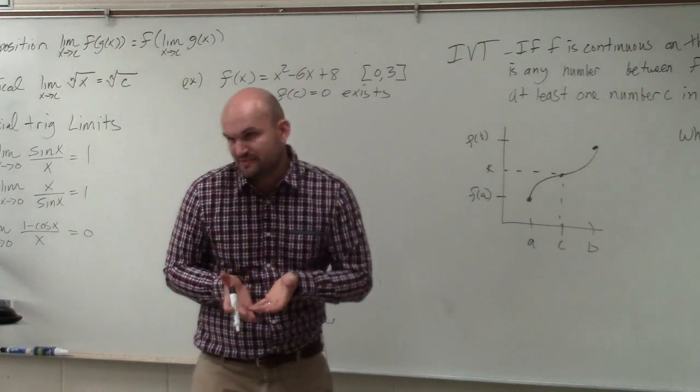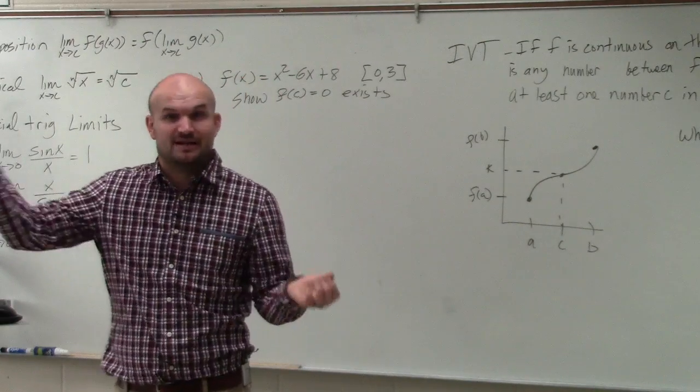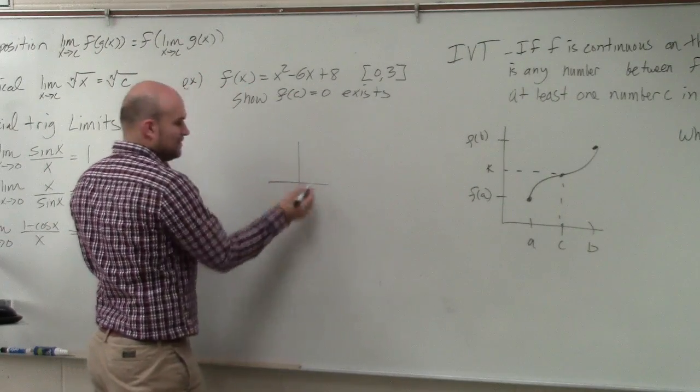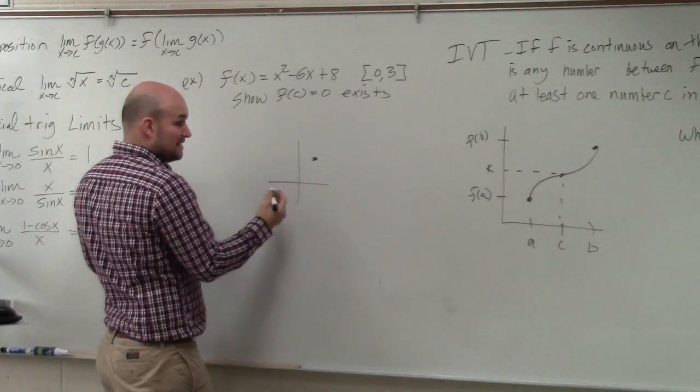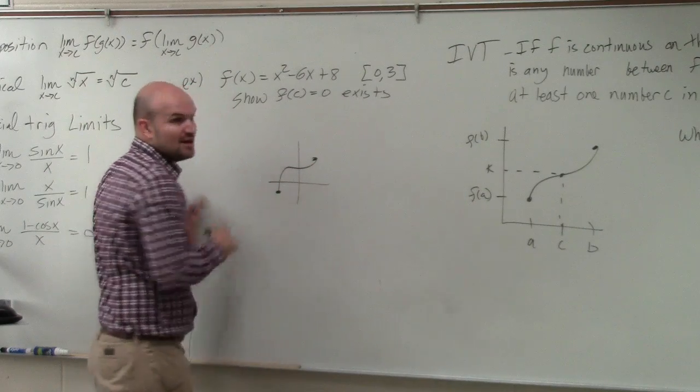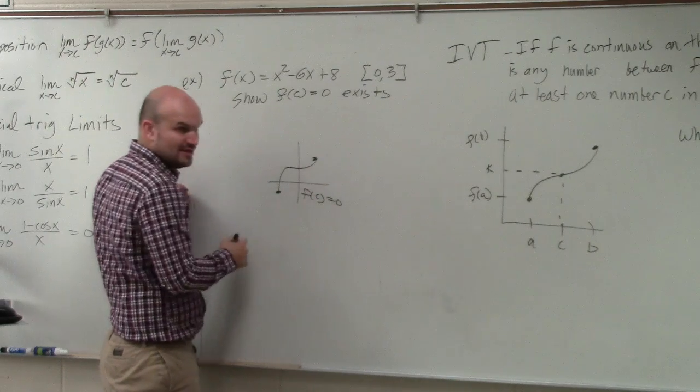Why the Intermediate Value Theorem is very important is because in between that closed interval, if I have a positive and a negative number, the only way to go from positive to negative, if you have an f(x) that becomes negative and an f(x) becomes positive, that means somehow, whatever this function looks like, we had to cross the x-axis. That means that f(c) has to equal zero.